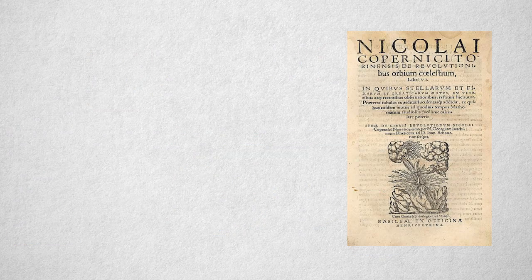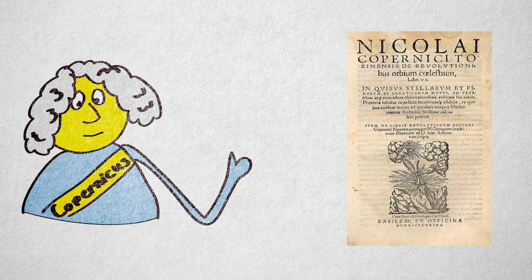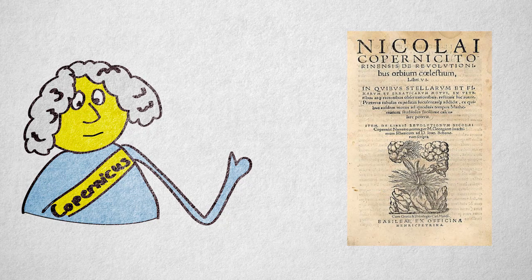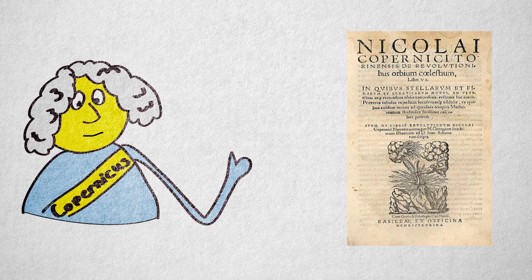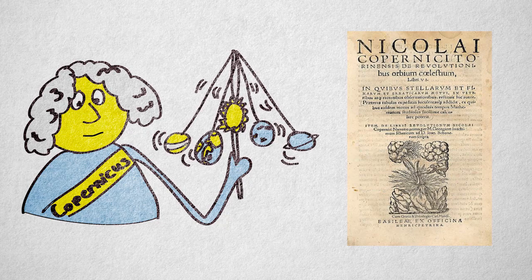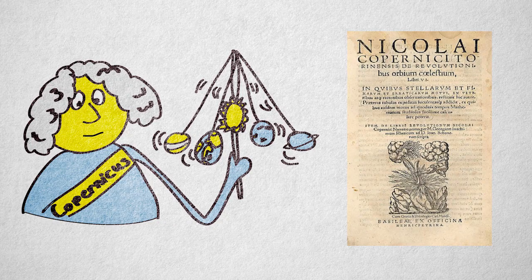Among these works was Derelevutionibus Orbium Celestium by Copernicus. This was the fourth important development to lead up to the scientific revolution. In Copernicus's new model of planetary motion, the planets, including Earth, moved in circles around the Sun.